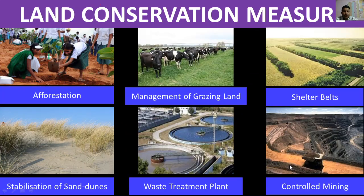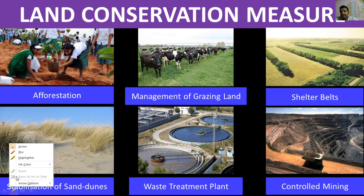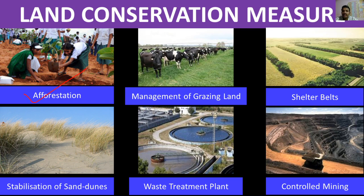Afforestation is the antonym of deforestation — instead of cutting trees, we plant them. As you can see in this photograph, students just like you are planting trees here.